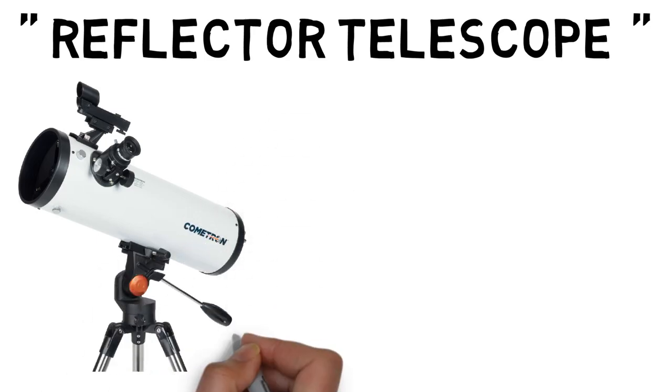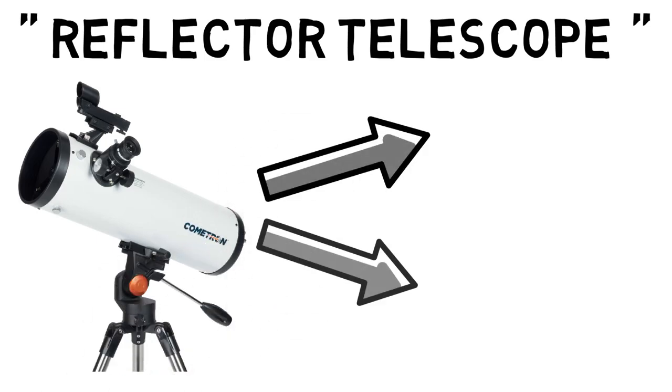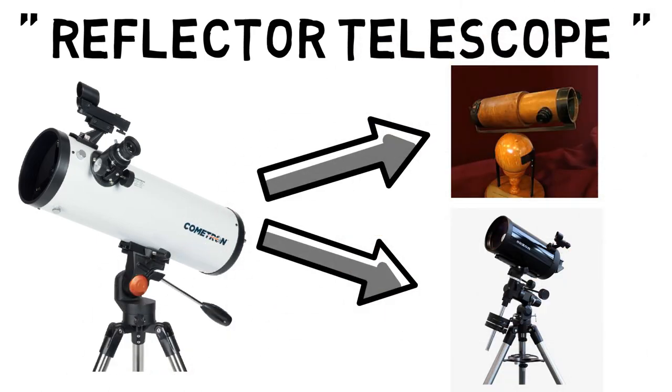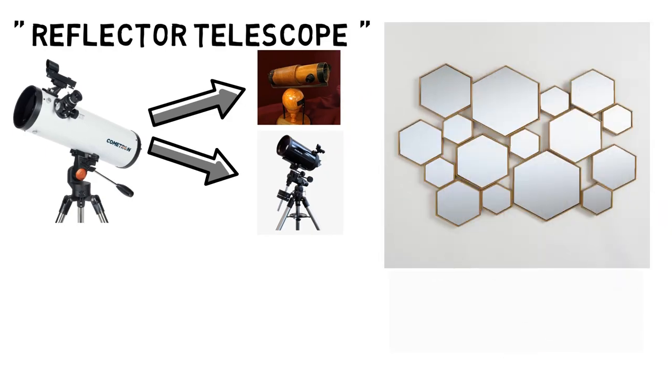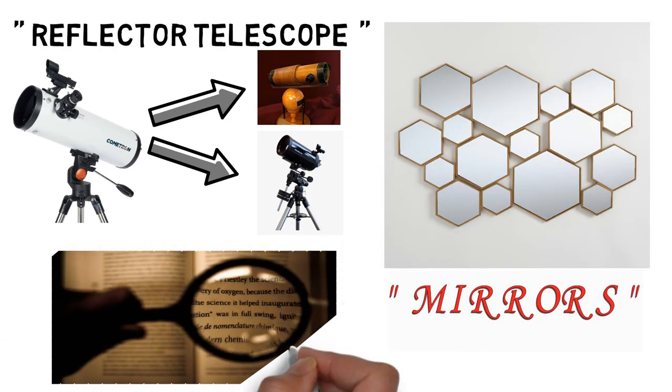Reflector telescope. In reflector telescopes, there are also two types: Newtonian reflector telescope and Cassegrain reflector telescope, which mainly use mirrors to magnify the image.